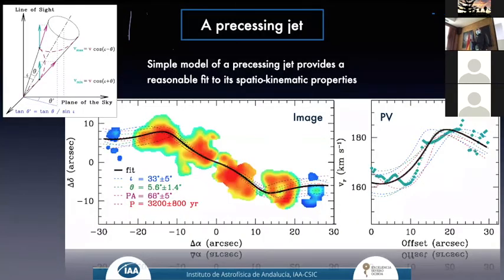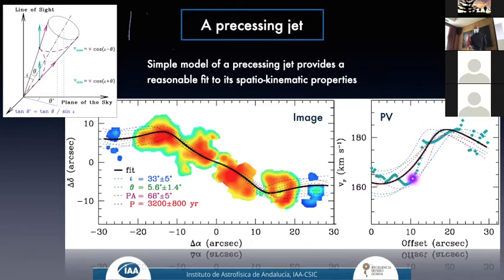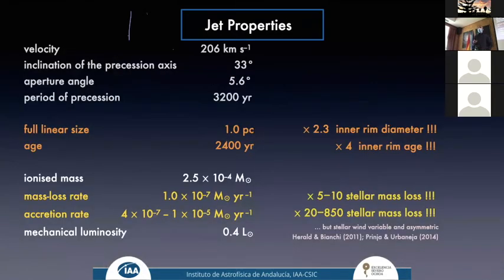The jet properties resemble those of a precessing jet, which we modeled using a simple toy precession model — and it fits very well what we observe. The jet is wobbling, and comparing with position-velocity maps the best-fit model matches the data well. From this we derived jet properties: the precession period is about 3,000 years, the precession angle is 33 degrees, and the full linear size of the jet is more than twice the diameter of the inner shell, meaning the jet is older than the nebula.